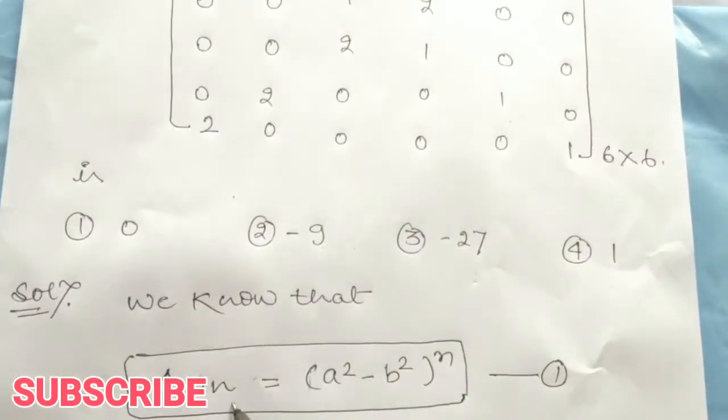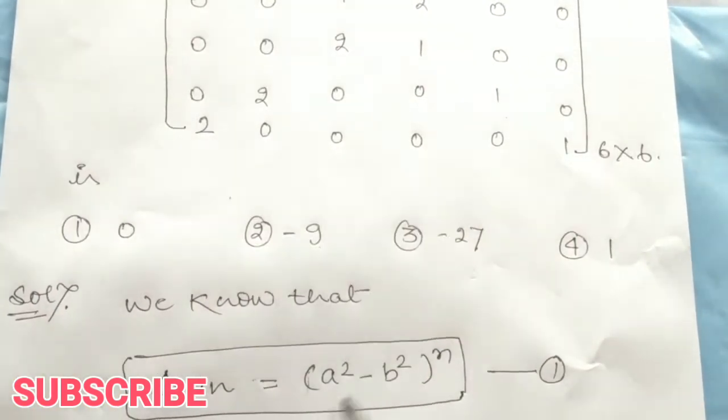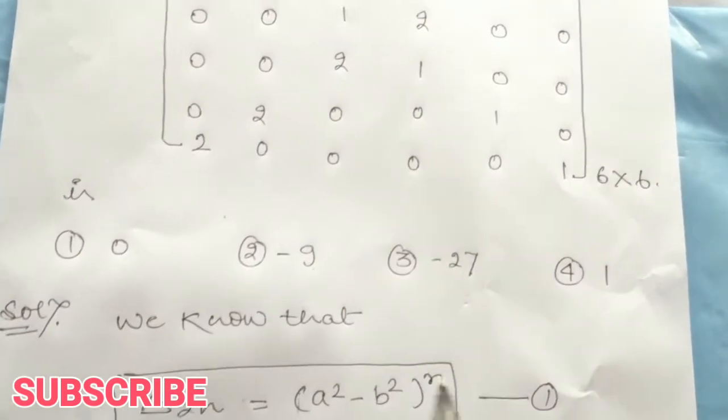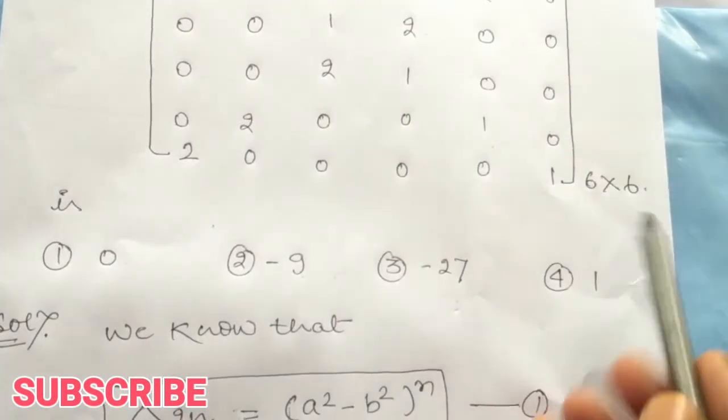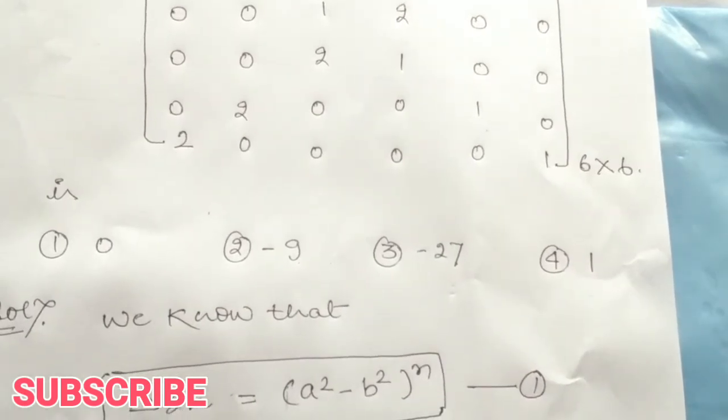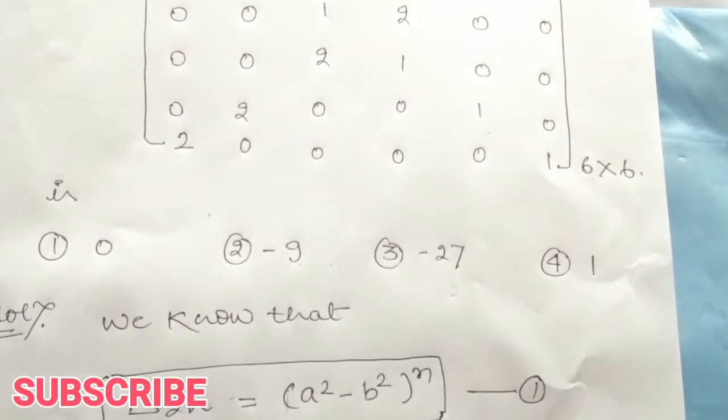The formula is: delta 2n is equal to (a squared minus b squared) to the power n. So what is n? For a 6 by 6 matrix, n is equal to 6 divided by 2. Here n will be 3.